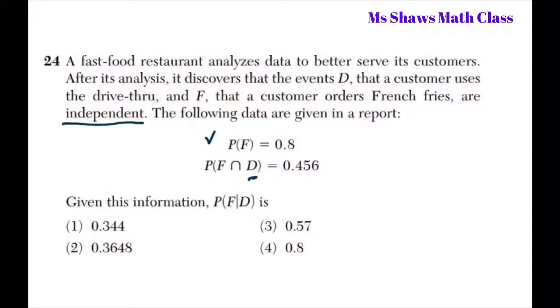And the probability of F and D is 0.456. They want to know the probability of F under the condition D. So this is probability of F occurring under condition D.